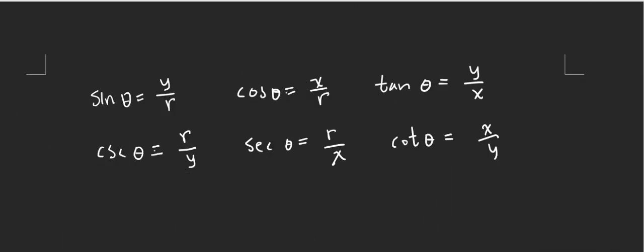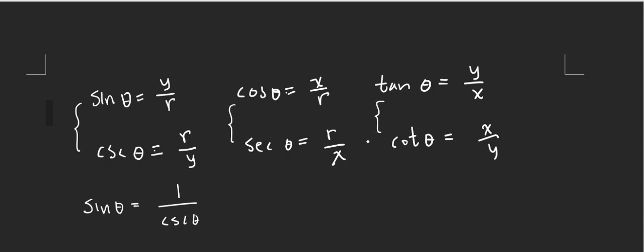In this video I want to talk about trig identities. Before I do that, let's review trig functions in terms of x, y, and r. Sine theta is y over r, and cosine theta is x over r. Sine theta and cosecant theta are reciprocals, cosine theta and secant theta are reciprocals, and tangent theta and cotangent theta are reciprocals.